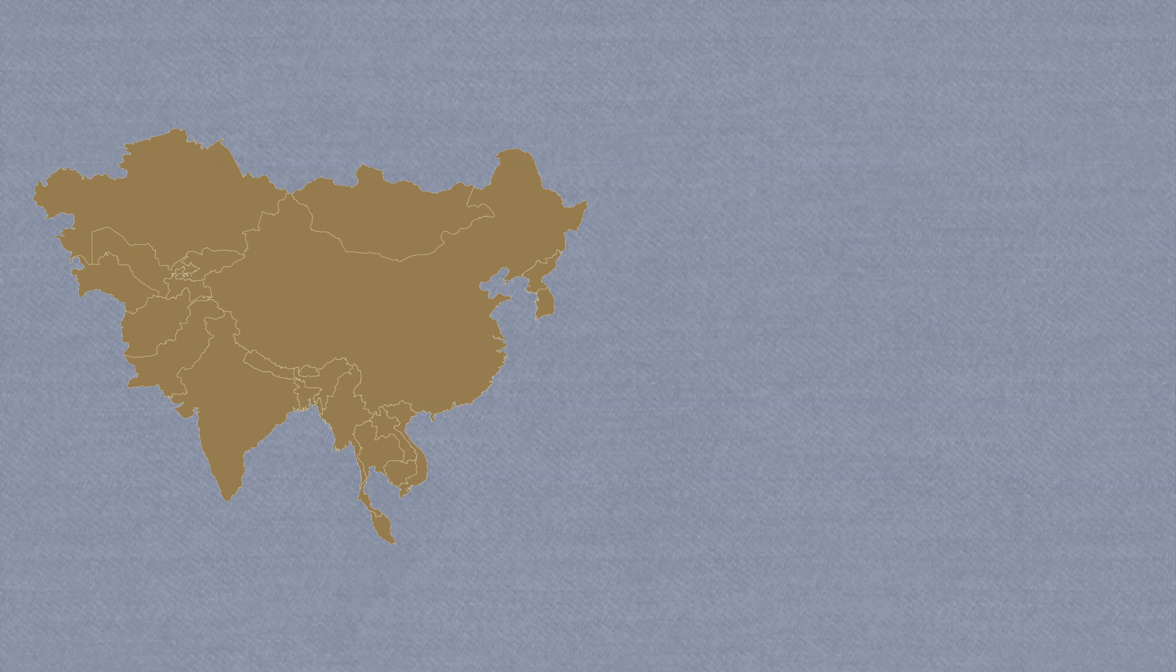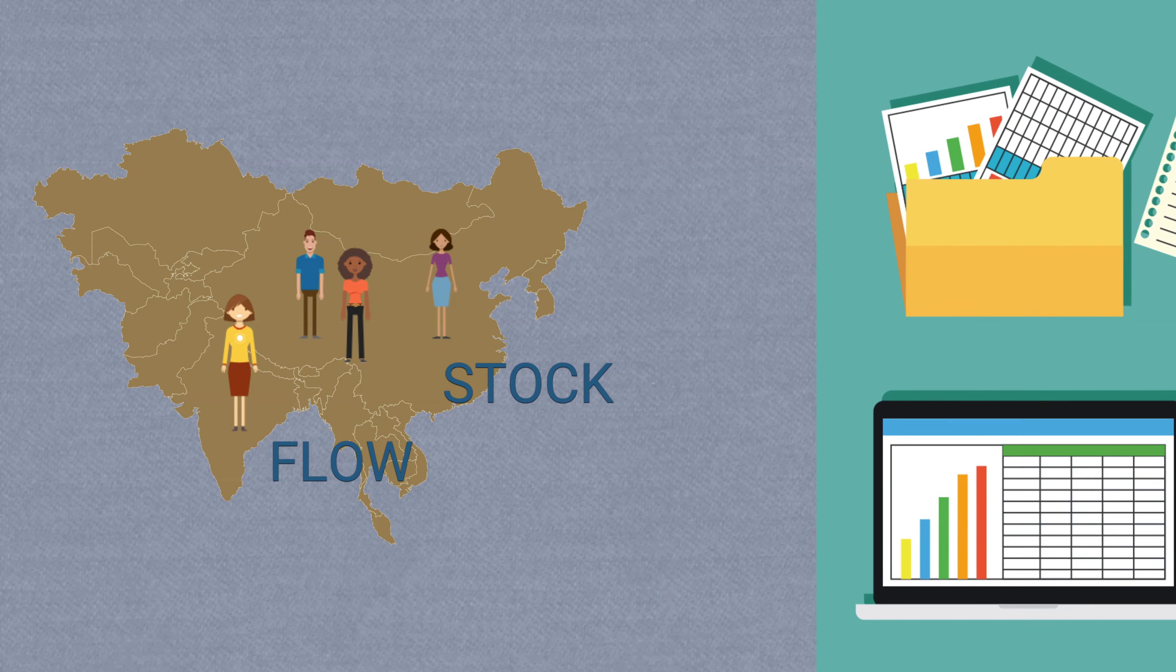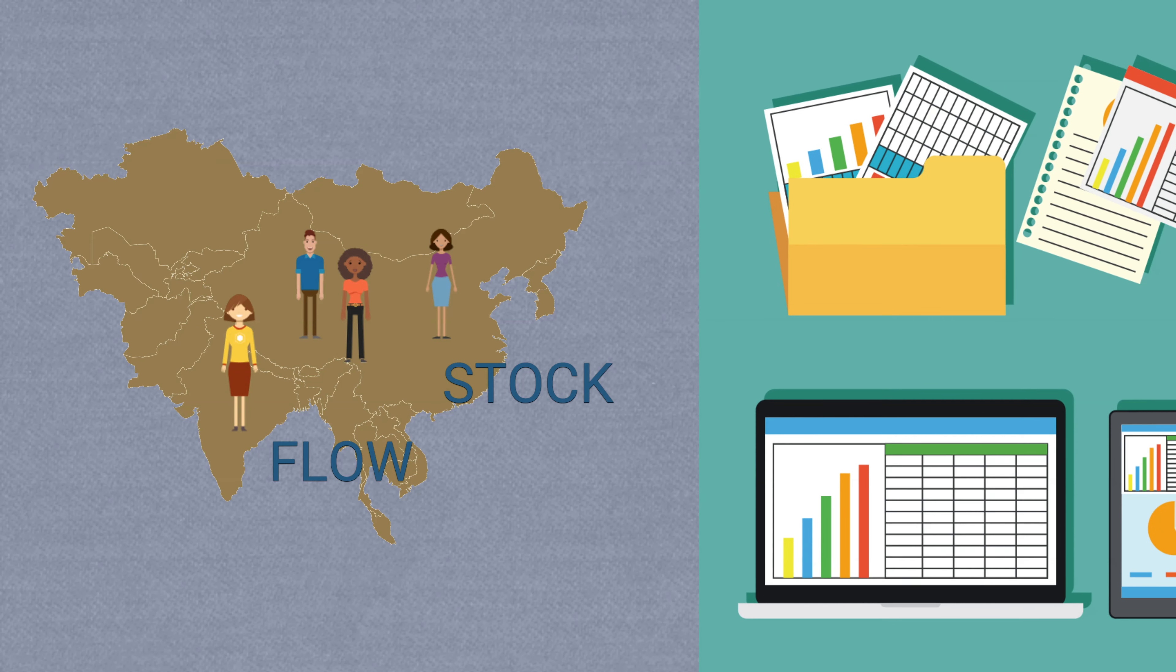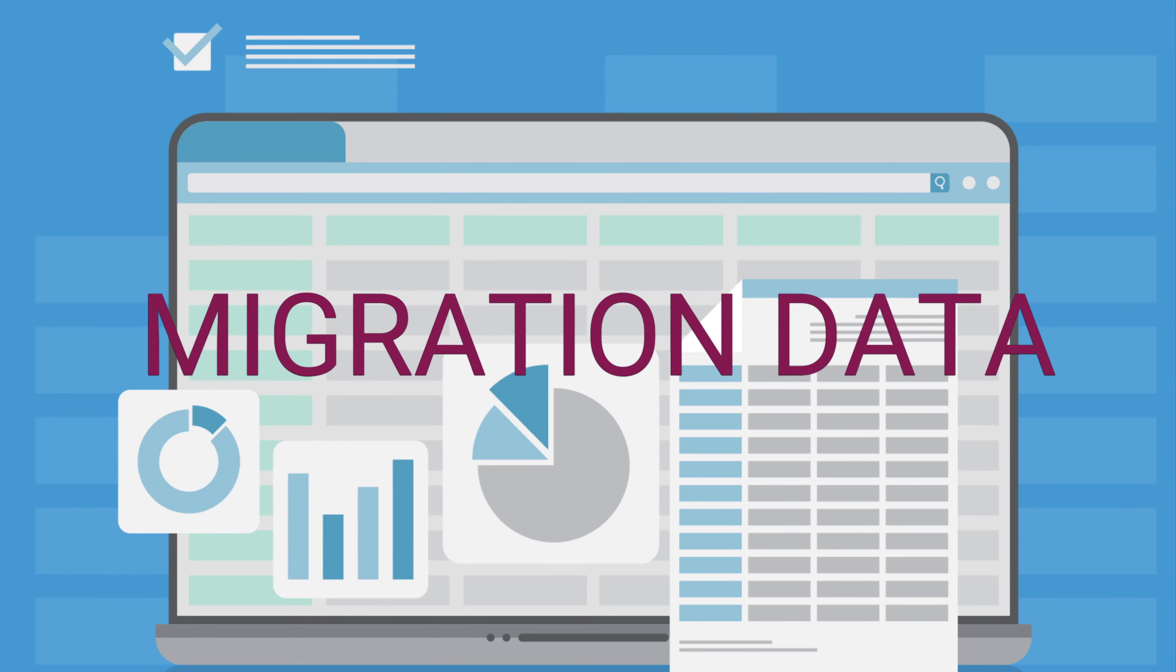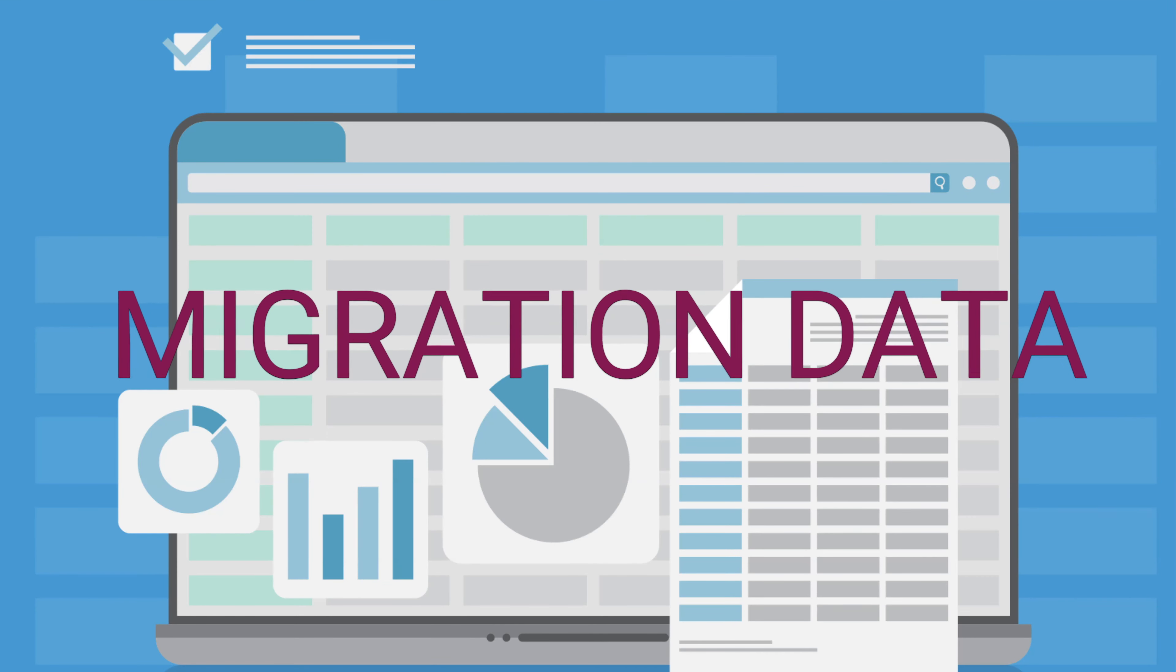Knowing how to interpret migration data is key to understanding large-scale immigration and emigration situations. A secondary key involves being aware of how databases are created and where the information comes from. This video will explain the different types of migration data and how they're collected.